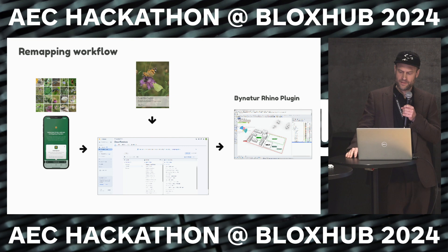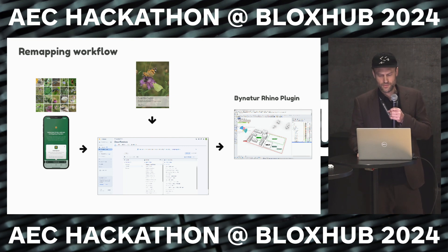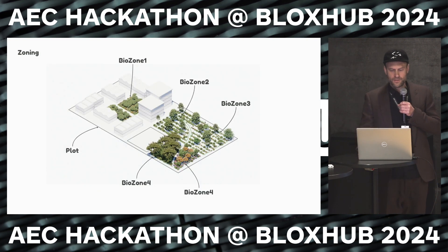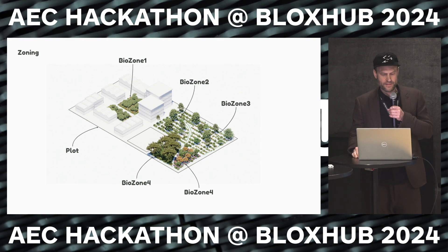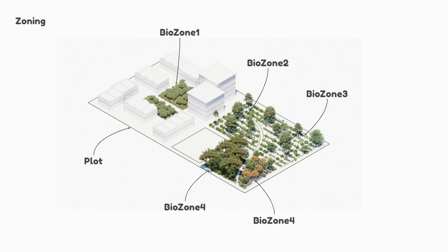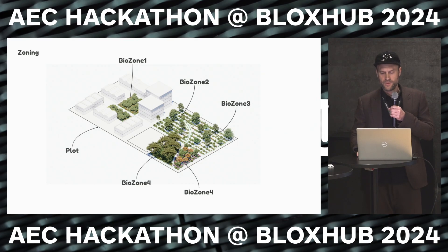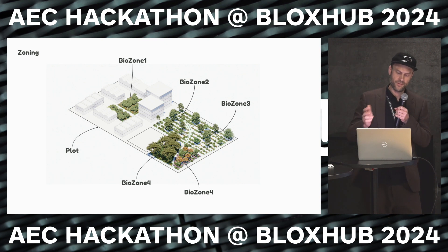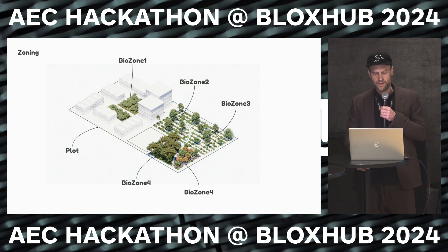The idea was to build up a database with a local focus on Denmark, and combine that with a Rhino plugin — a Rhino tool that should empower designers. The project has a certain size, and within it there can be different zones of biodiversity, related to the way they are mapped with the app. The tool is about being able to work specifically with those different zones, both according to biodiversity and according to the landscaping of those areas.